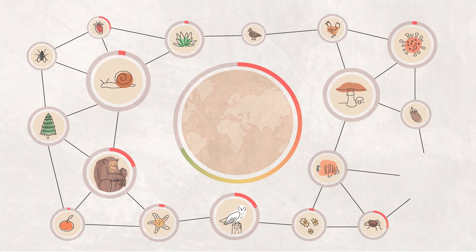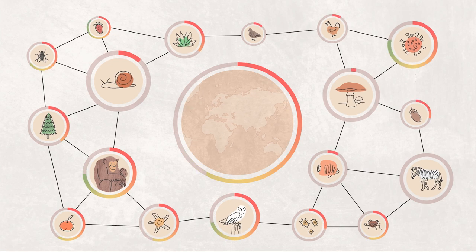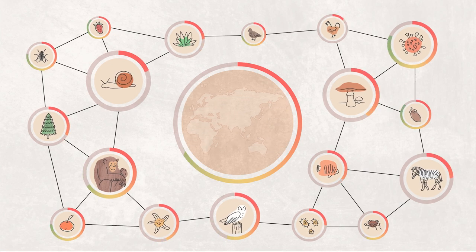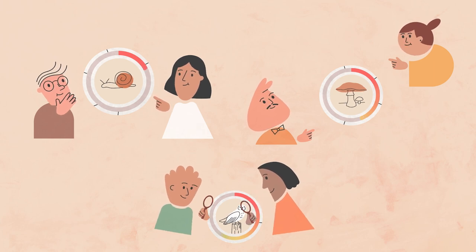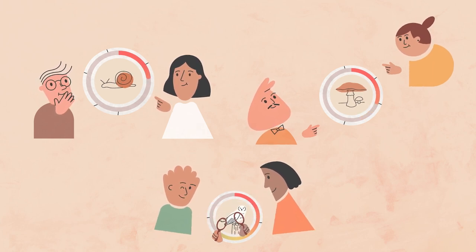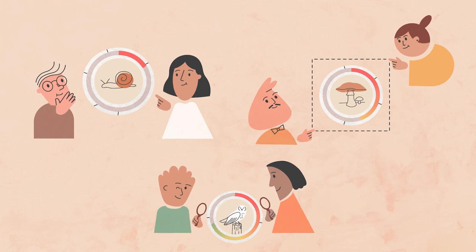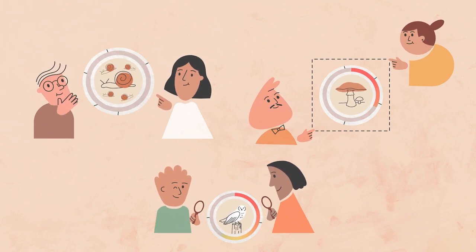GBIF provides the world's largest single source of data on the past and present occurrence of species. This data provides verifiable information that experts use to assess extinction risk, identify and conserve key biodiversity areas and monitor invasive species.